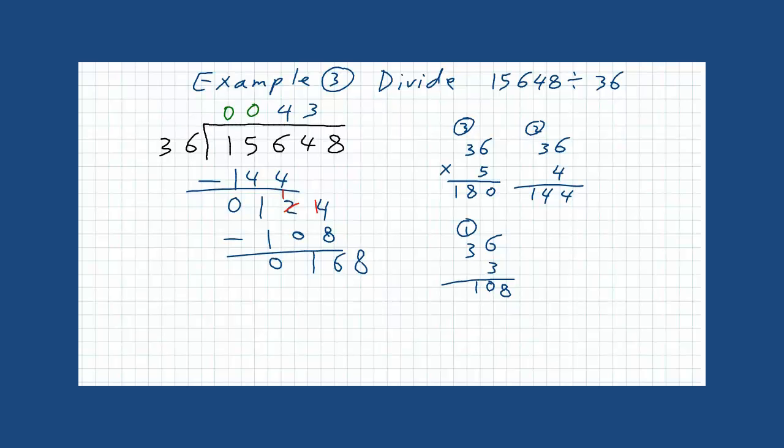168 divided by 36. I think it is clear that the most appropriate number for us is 4. Because 4 times 36 is 144. Now, subtract. You will have here 24.